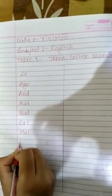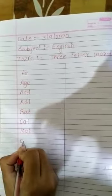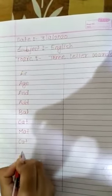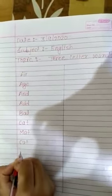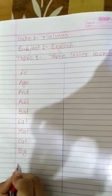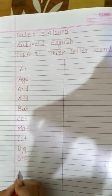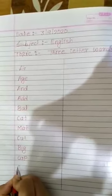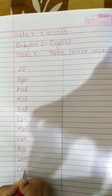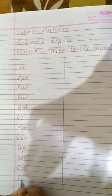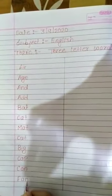Cut. C-U-T. Cut. Big. B-I-G. Big. Cab. C-A-B. Cap. C-A-P. Can. C-A-N. Can. Fan. F-A-N. Fan.